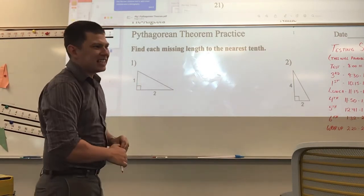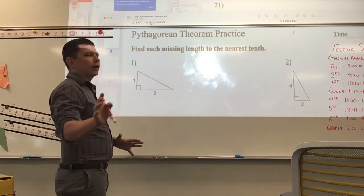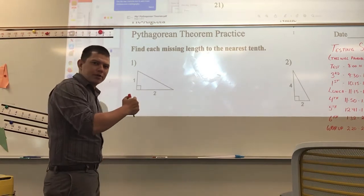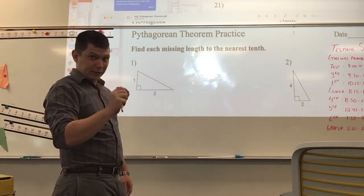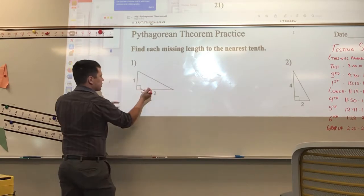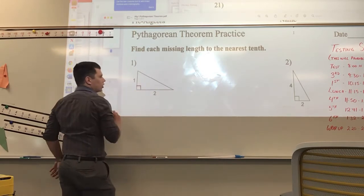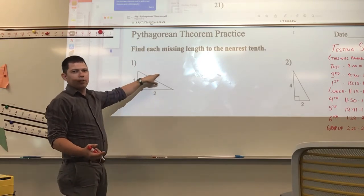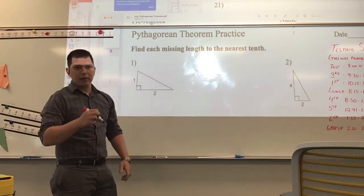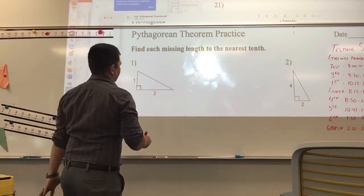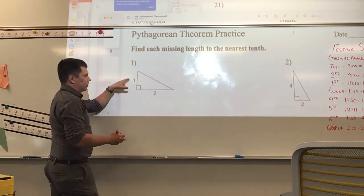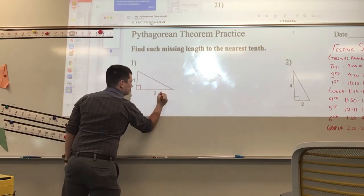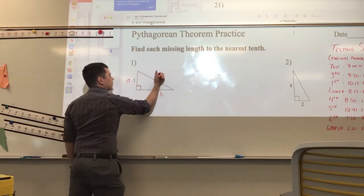The Pythagorean Theorem states — before we get into that, there are three sides to a triangle, any triangle. But in a right triangle, there are two different types of sides. The two sides that make up the right angle are known as legs. The third side is called the hypotenuse. We label the legs A and B, and the hypotenuse C.